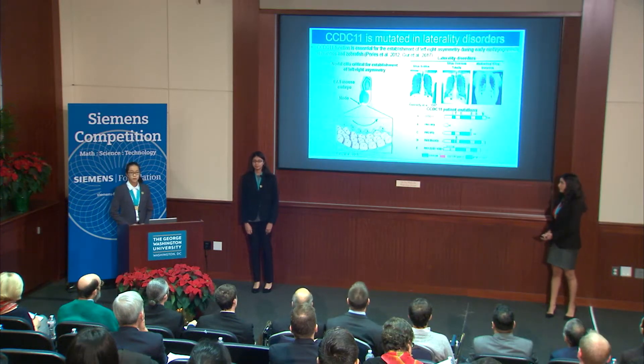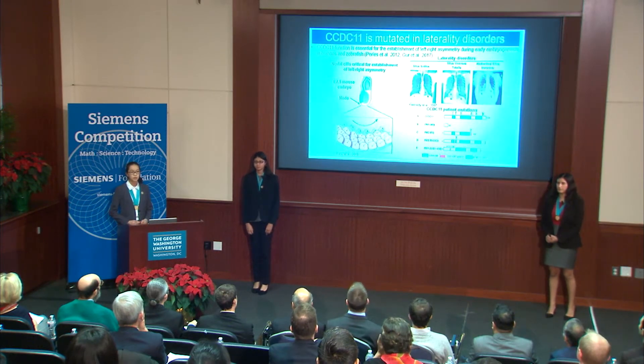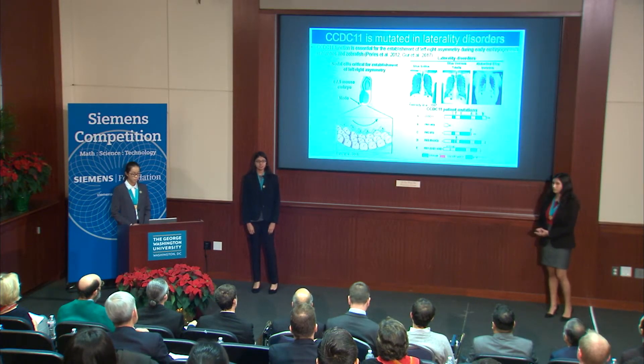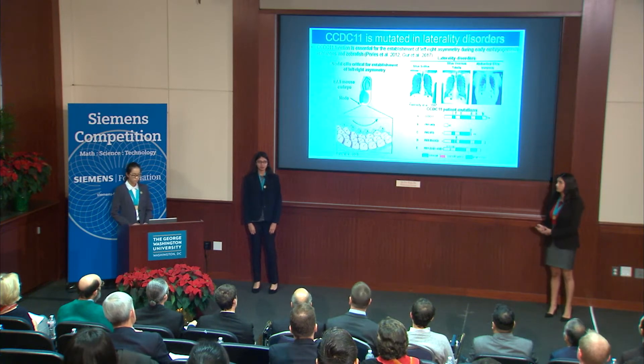It is proposed that the clockwise motion of nodal cilia is responsible for creating a fluid flow that establishes left-right asymmetry in vertebrate animals. When the cilia are defective, the location of organs will be randomized. Consistent with its role in ciliogenesis, CCDC11 human mutations have been found in patients with laterality disorders.